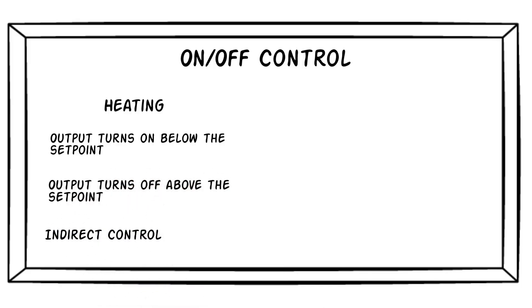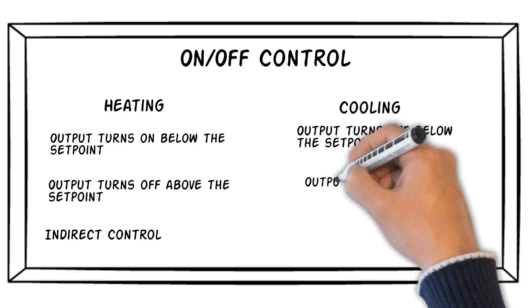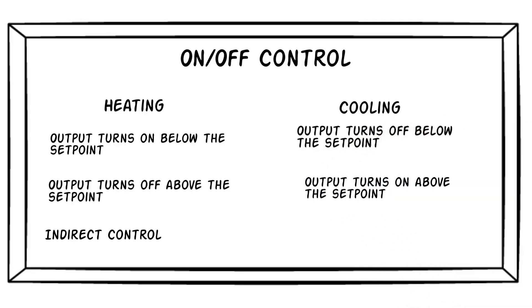It's called indirect acting control because as the temperature goes up, the power to the heater goes down. In a cooling application, the output is turned off below the set point and turned on above the set point. This type of action is called direct acting control.